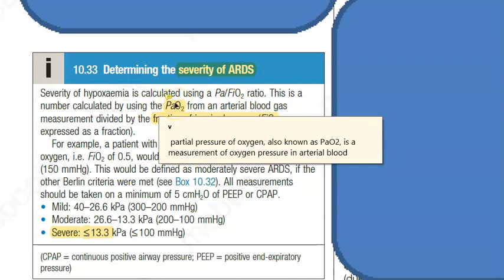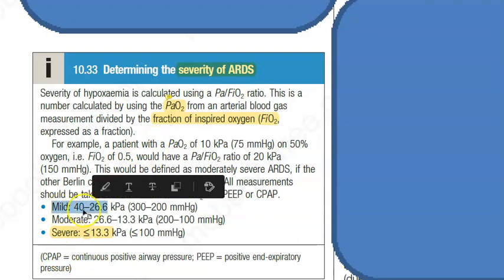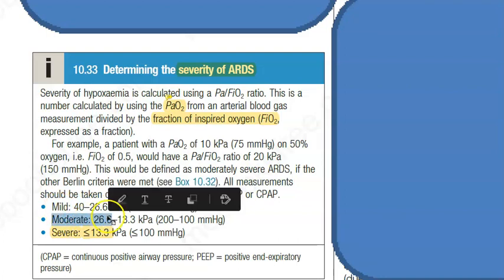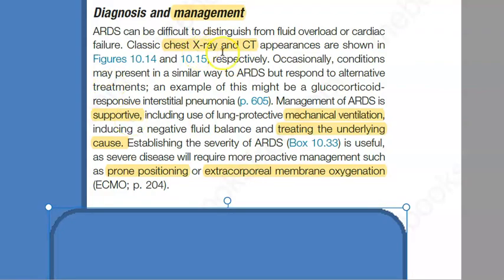The severity of ARDS is graded by PaO2/FiO2 ratio: mild is around 40, moderate is 26, and severe is less than 13 kPa. Management includes chest X-ray and CT, mechanical ventilation, supportive care, treating the underlying cause, prone positioning if required, and ECMO — extracorporeal membrane oxygenation — which is very expensive, costing crores in India. That's it for this video on ARDS.